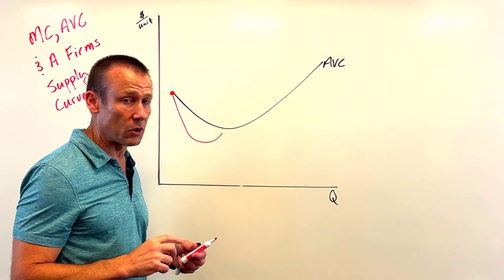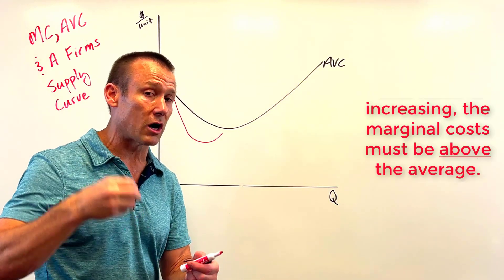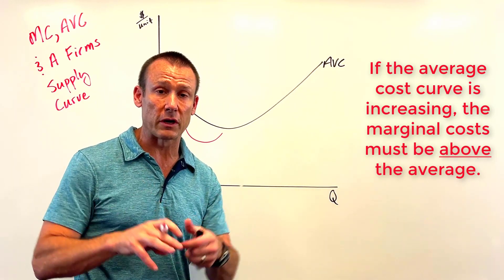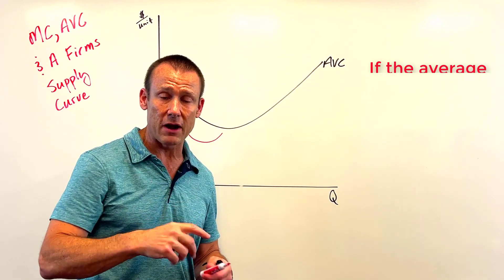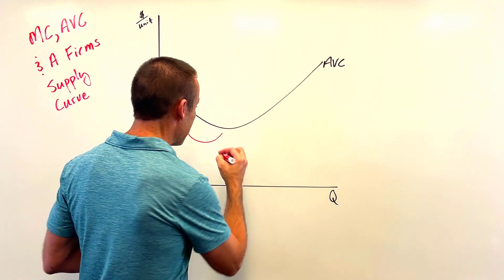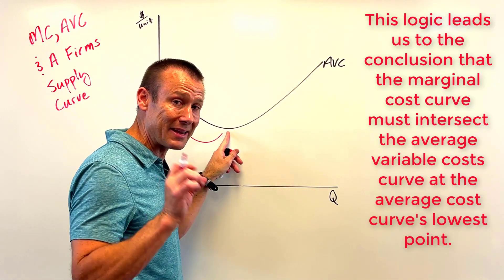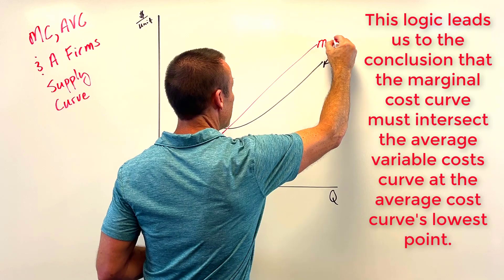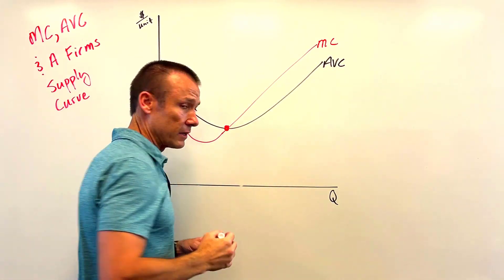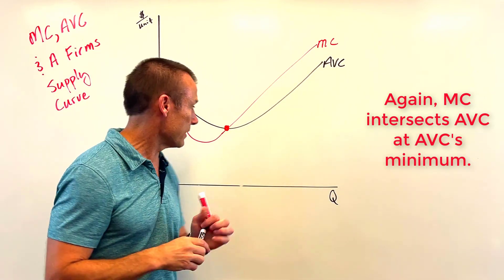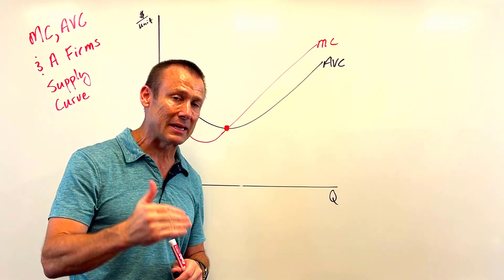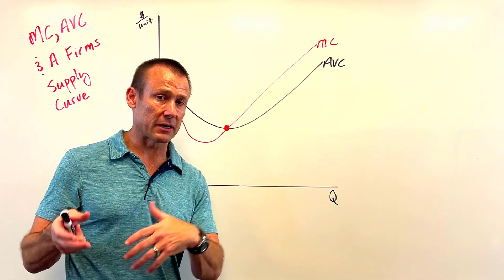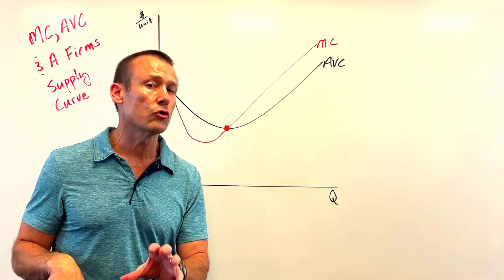If the average is going up, marginal cost has to be above it. If your average in a course starts going up, it's because your marginal grade — that next grade — was higher than your average, pulling it up. What you get from that is that the MC curve is going to intersect the AVC curve at its minimum. That intersection point is really important — it's the beginning of the supply curve.